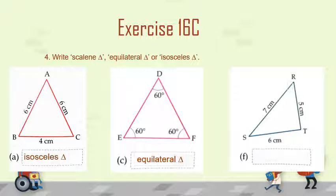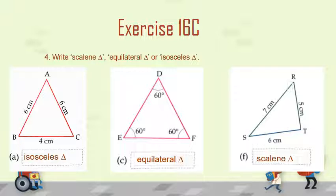In the third figure, there is triangle RST and in this triangle all the sides are different — one side is equal to 7 cm, the next side is equal to 6 cm, and the third side is equal to 5 cm. So all the sides are different. What kind of triangle is this? Well, this is a Scalene Triangle where no two sides are equal, or we can say that all the sides are different.